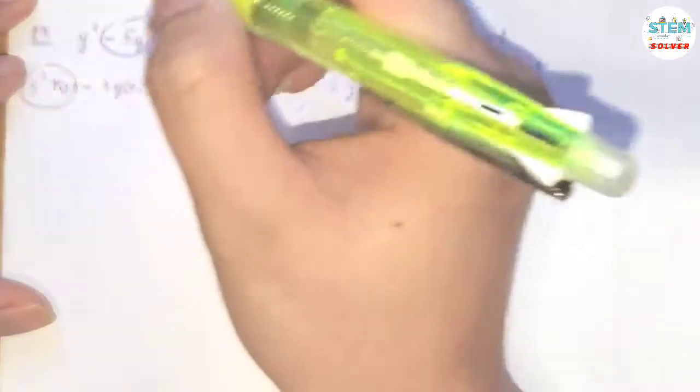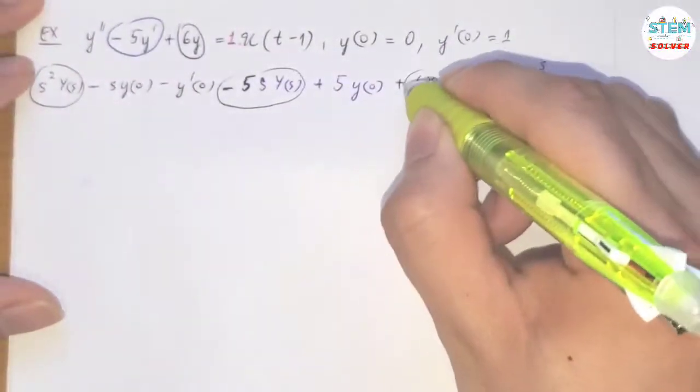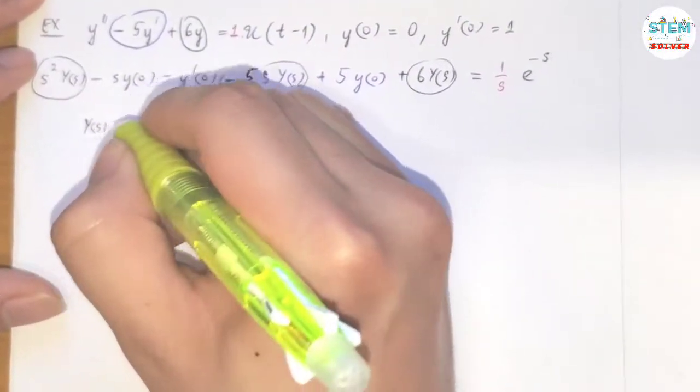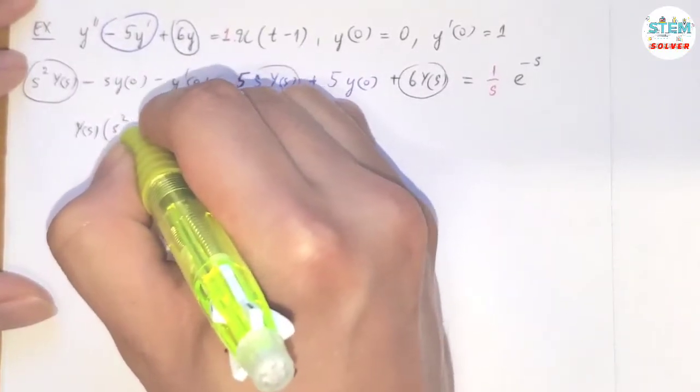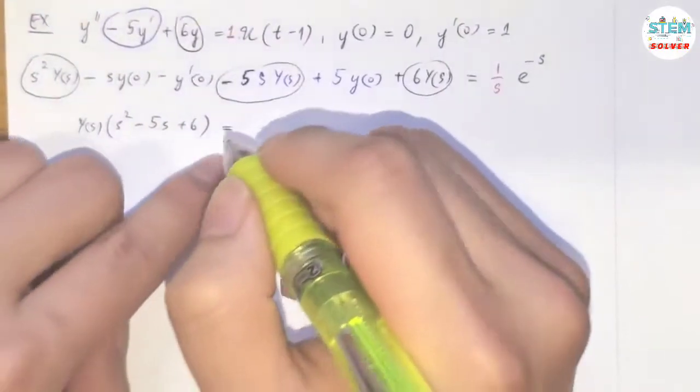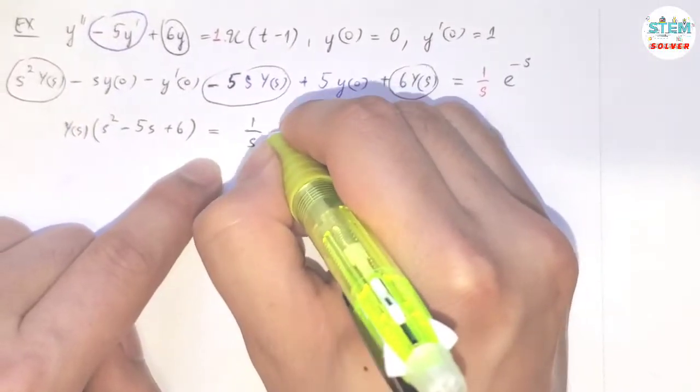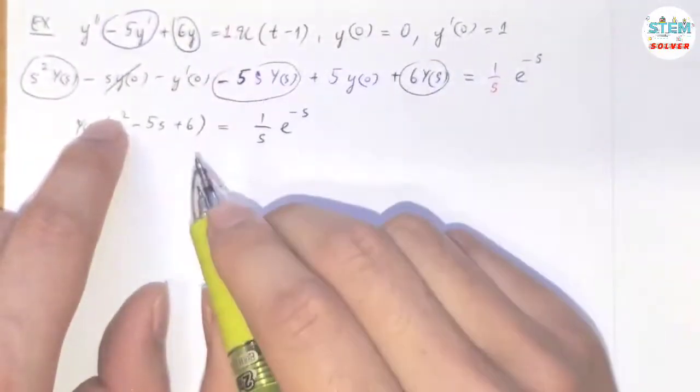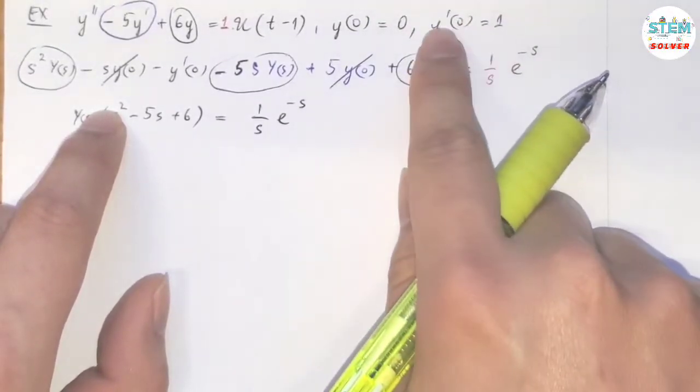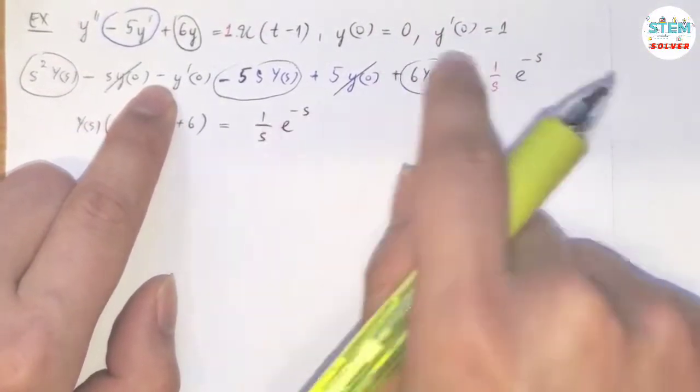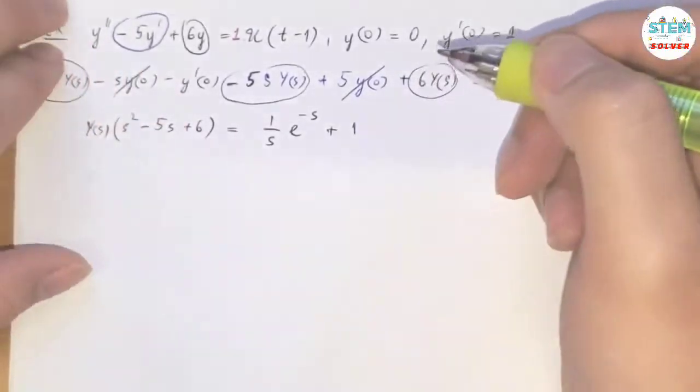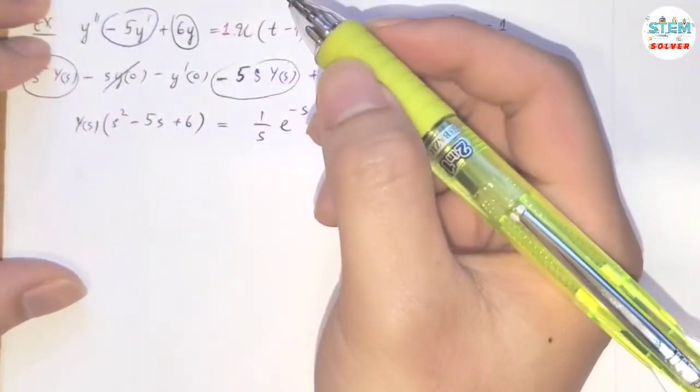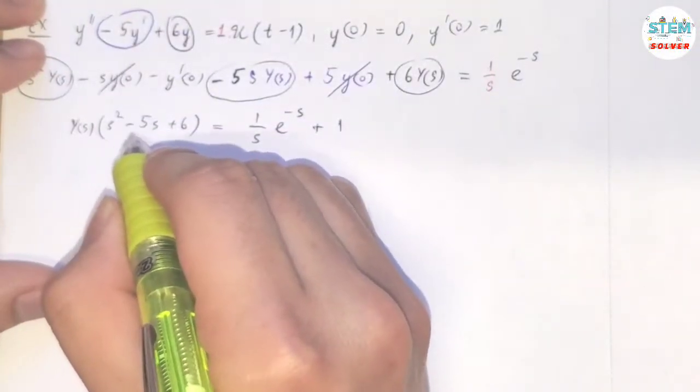Now, take a look at the Y(s)'s. In fact, I'll factor Y(s), then I have s² minus 5s plus 6 in parentheses. On the right side, I have 1 over s e to the negative s. y(0) equals 0, so this is gone. y'(0) equals 1, so I have negative 1 moved to the other side, which is positive 1.